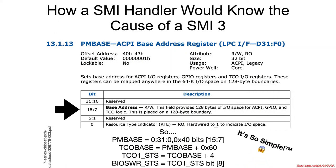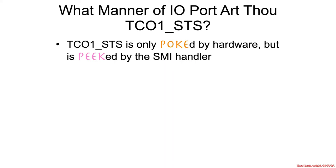It's so simple, right? TECO status 1 is something that's primarily poked by hardware — hardware sets the bits saying why a system management interrupt happened — and then it's peeked by the SMI handler, although the SMI handler also has to poke it to clear the bits. So as we saw with that BIOS write status, it needs to write a 1 back over the existing one in order to set it back to a 0.